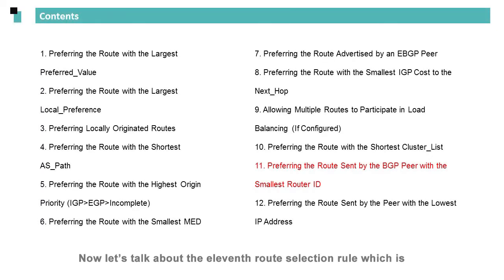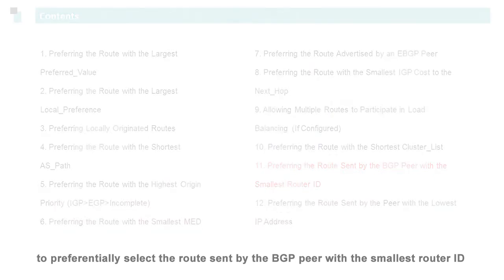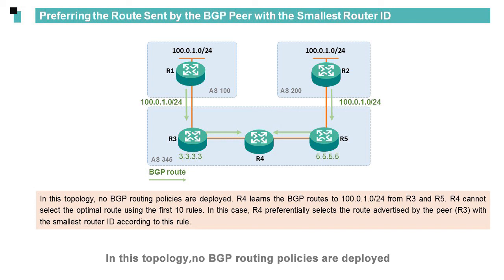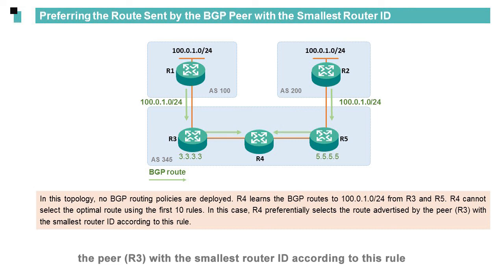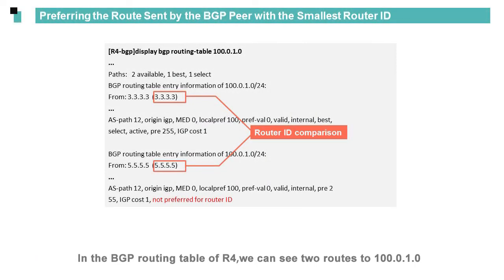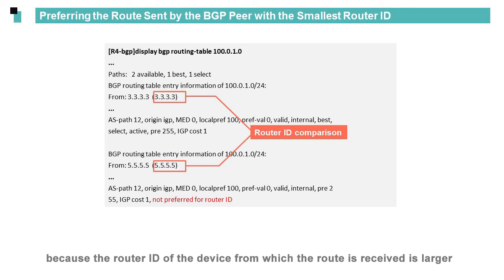Now, let's talk about the 11th route selection rule, which is to preferentially select the route sent by the BGP peer with the smallest router ID. In this topology, no BGP routing policies are deployed. R4 learns the BGP routes to 100.0.1.0/24 from R3 and R5. R4 cannot select the optimal route using the first 10 rules. In this case, R4 preferentially selects the route advertised by peer R3 with the smallest router ID. In the BGP routing table of R4, we can see two routes to 100.0.1.0/24. The first route is preferred, and the second route is not preferred because the router ID of the device from which the route is received is larger.